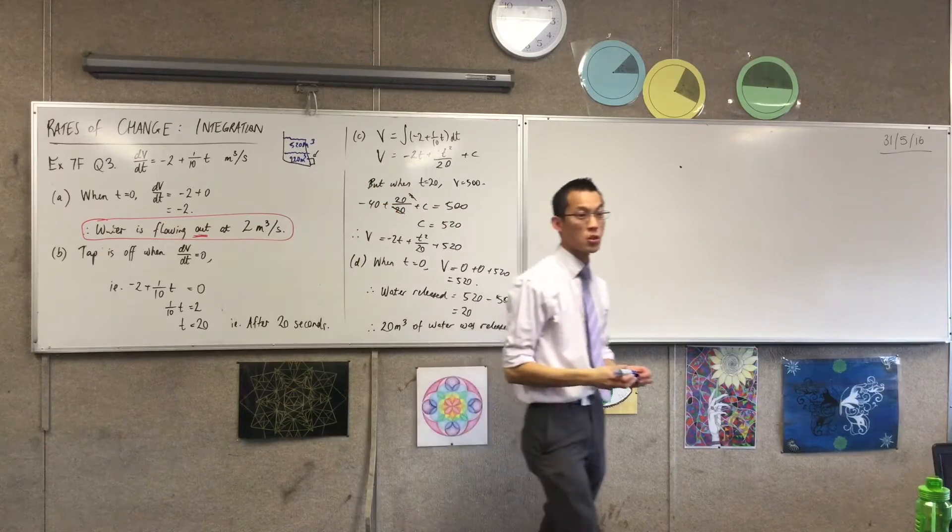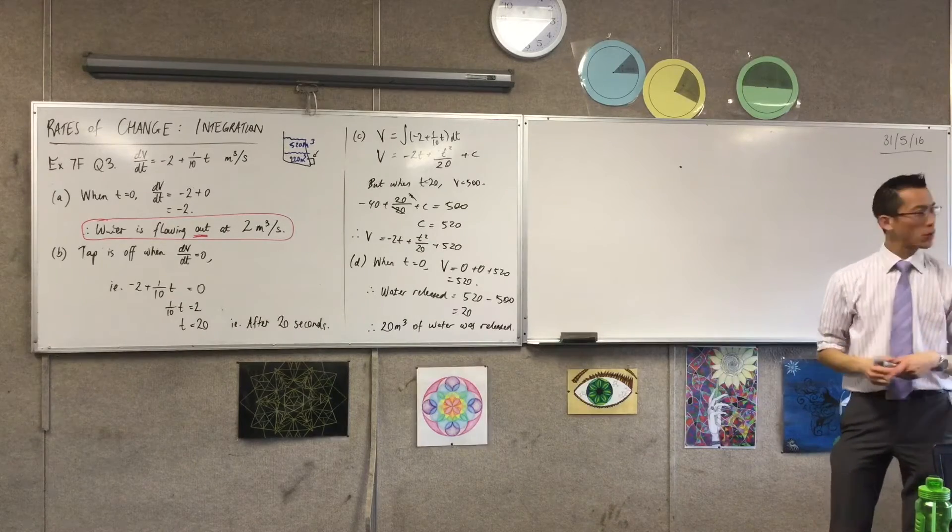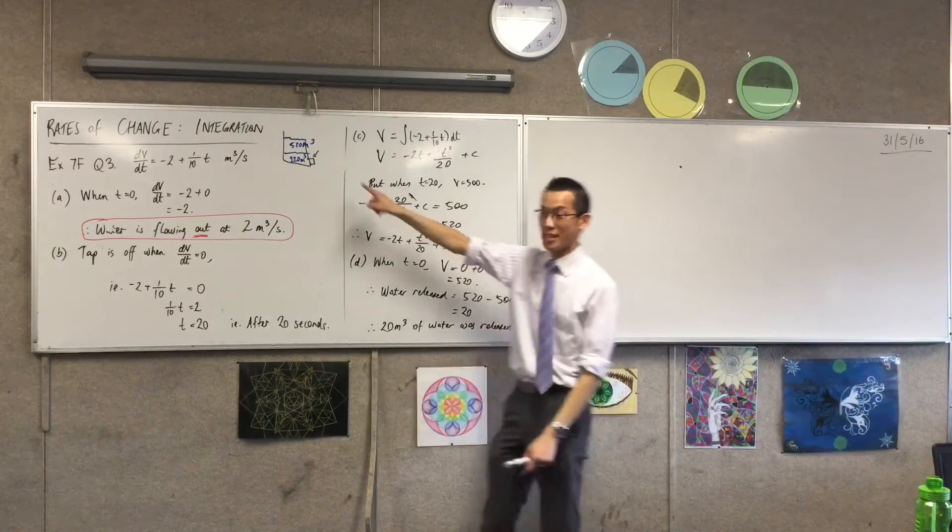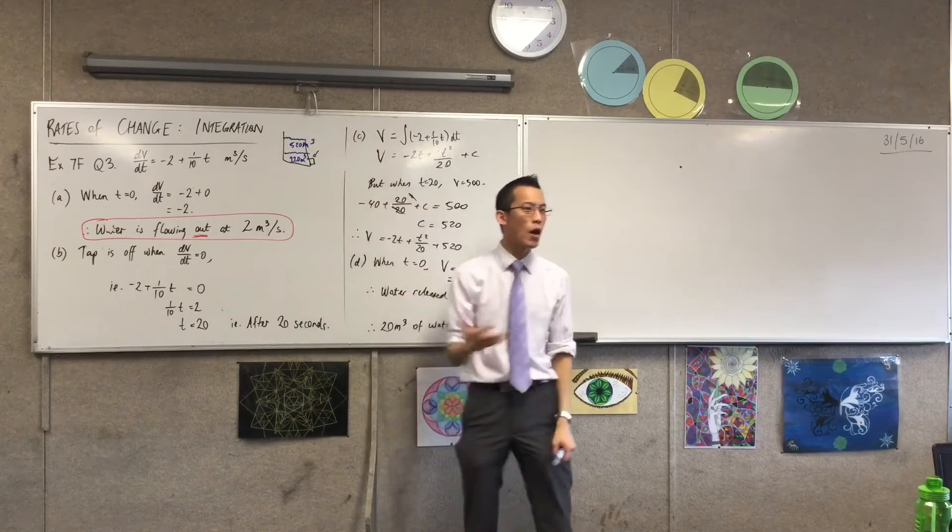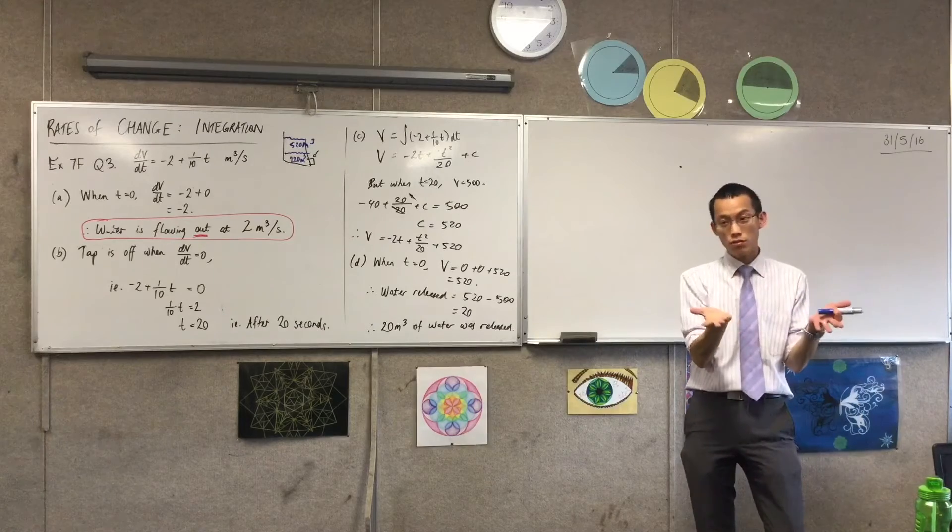We want there to be 220 cubic meters left at the end. Does that make sense? But of course, you cannot wait until you see the water line pass that mark, because why not? Why can't you wait until that point?